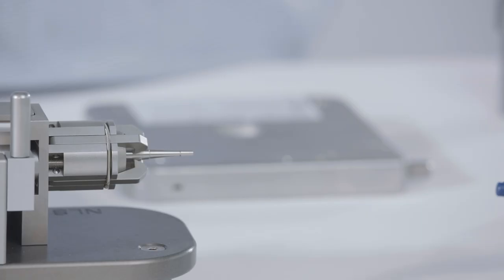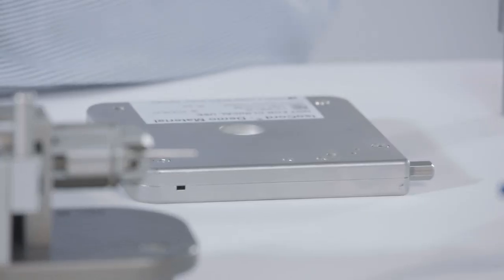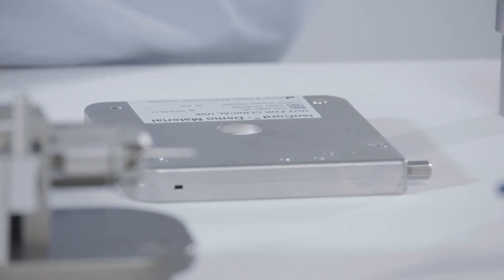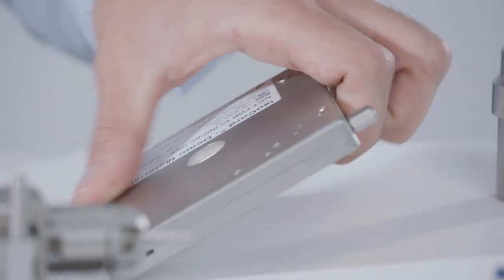Isocord is a seed chain consisting of iodine seeds and spacers embedded in a biodegradable suture. The seed chain is supplied in an isocord magazine which can store up to 70 seeds.